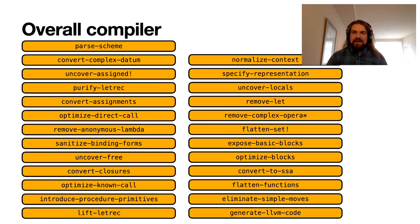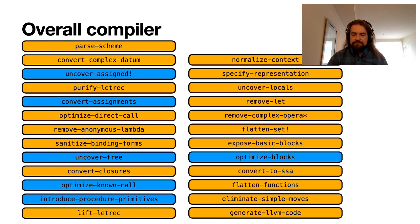Today we're only going to talk about a handful of those passes — those focused on using mutability. We're going to talk about uncovering assigned variables and converting those assignments, some passes involved in closure conversion (uncovering free variables, optimizing known calls, and introducing procedure primitives), and then something much lower level: optimizing blocks, where we talk about how we use mutability inside labels. Although I didn't say we'd discuss parsing, I will for a moment, because this is how we set up our variables in the environment.